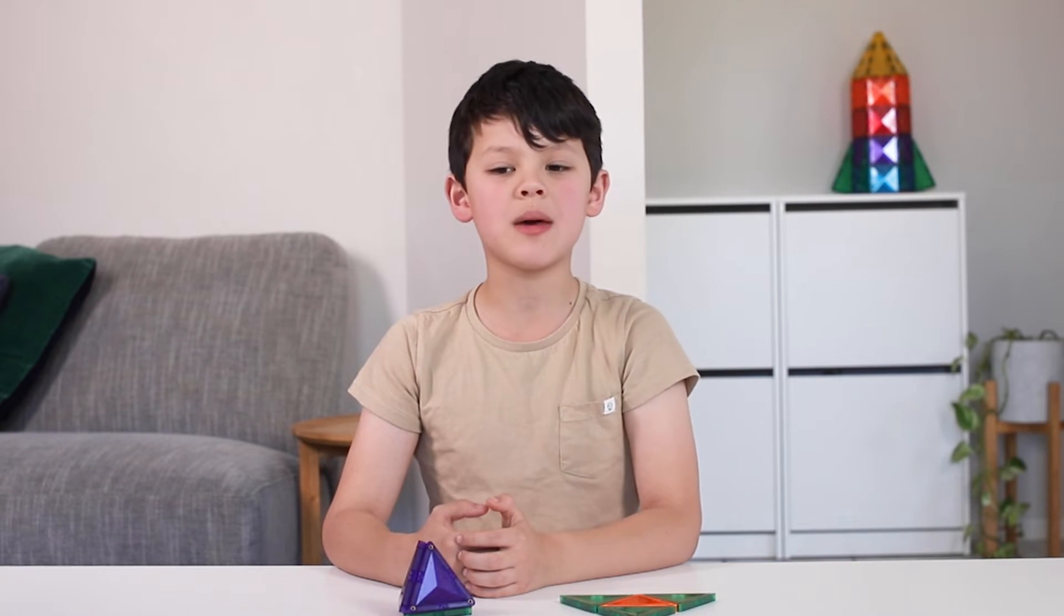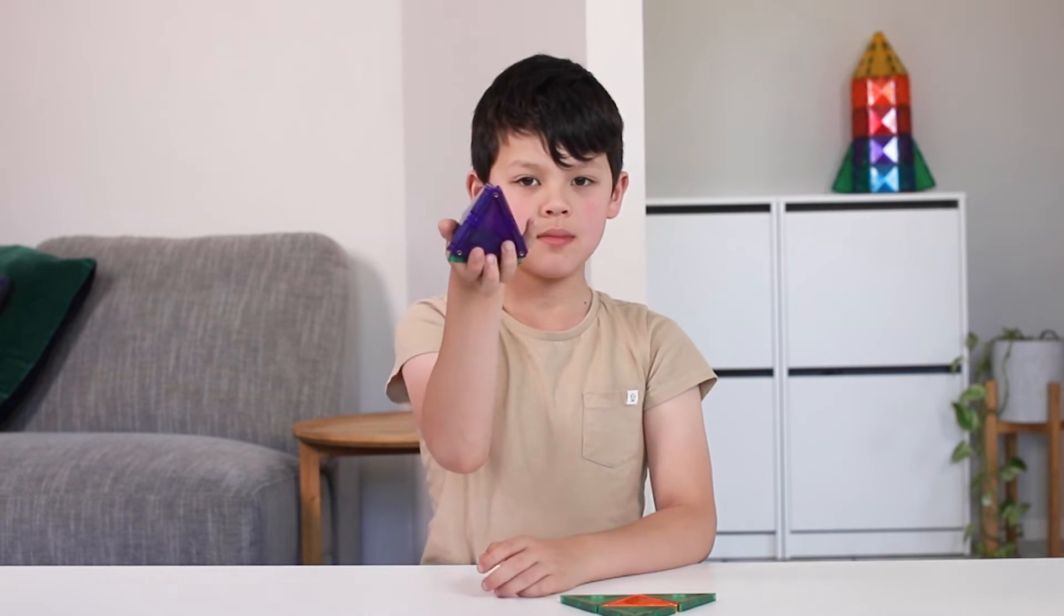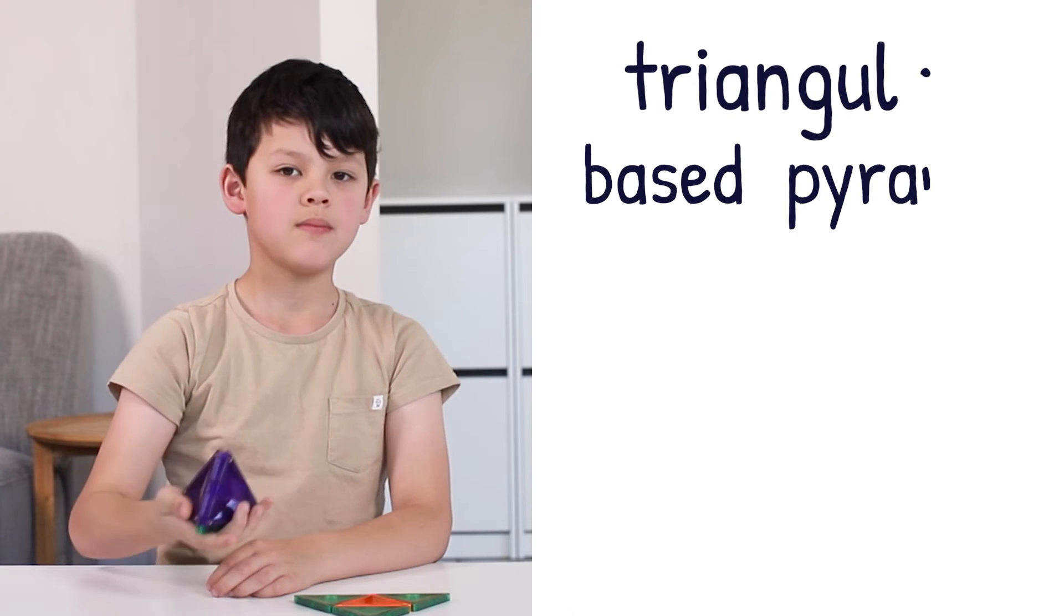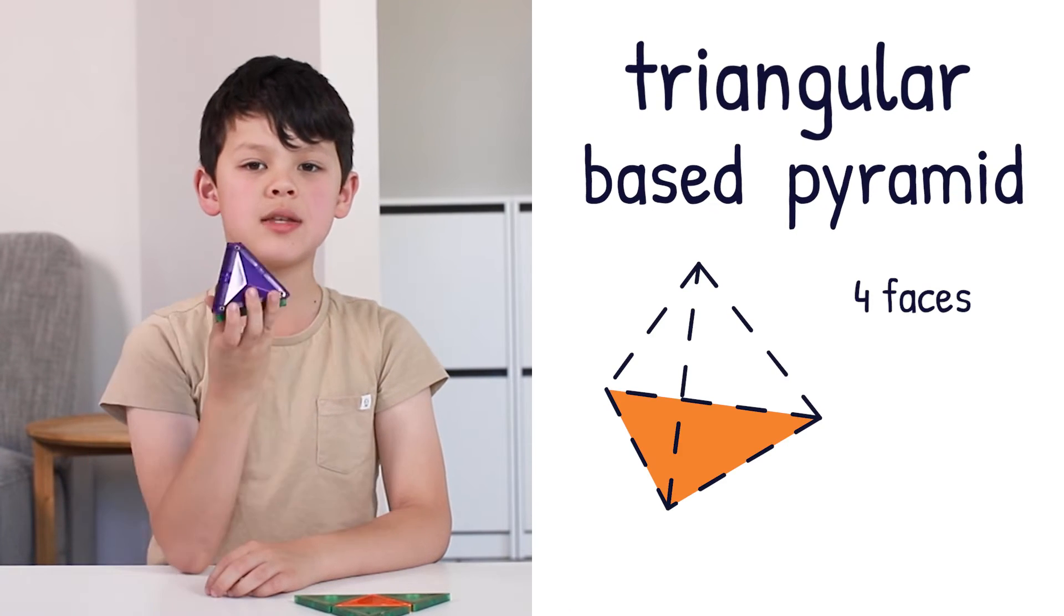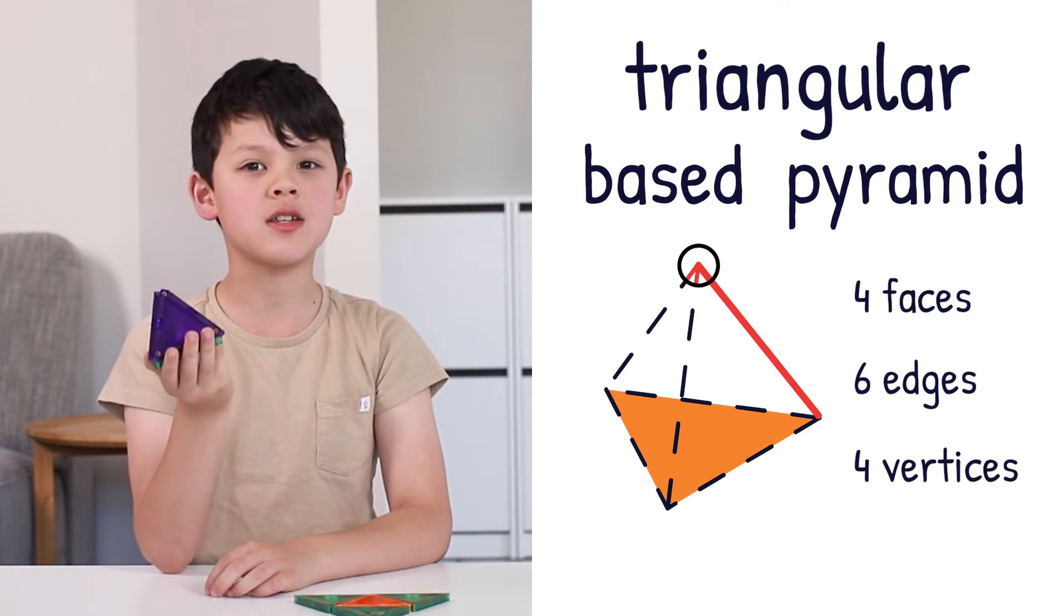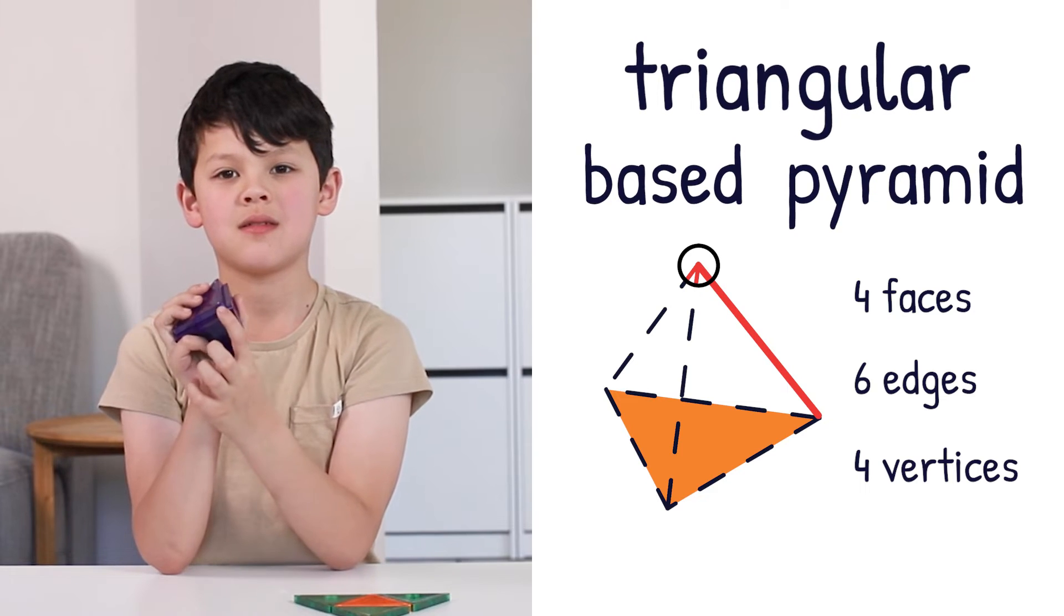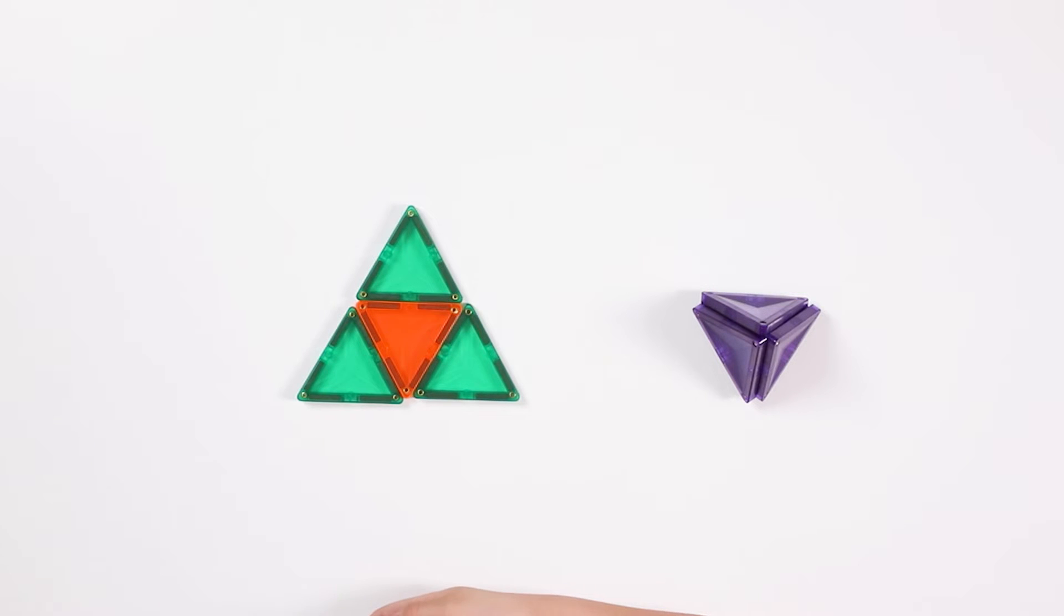This is a triangular base pyramid. It has 4 faces, 6 edges, and 4 vertices. This is the net for the triangular base pyramid. It has 4 faces. Let's fold it up.